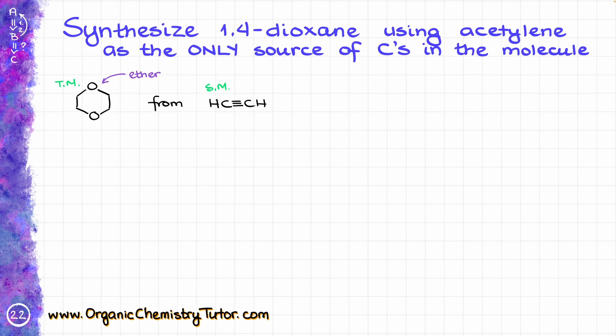Normally, when it comes to ethers, we are going to synthesize those via the Williamson ether synthesis, if we have the corresponding alcohol that we can easily convert into an alkoxide, and of course we need an alkyl halide, which should be a primary alkyl halide. We can synthesize this ether by making these two bonds at the same time, if we have a diol on one end and the dihalide on the other end.